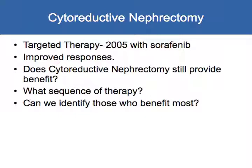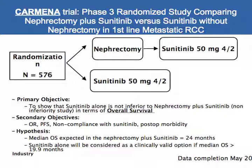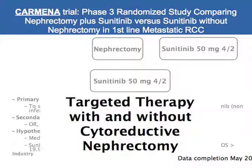In the current era with newer systemic therapies since 2005, we see improved responses both in the kidney and metastatic sites with targeted agents. The question became: does cytoreductive nephrectomy still provide benefit in this era, what sequence of therapy should we undertake, and can we identify those who would benefit most from surgery? The CARMENA trial asks exactly this — is nephrectomy still relevant in the era of targeted therapy, specifically sunitinib — randomizing patients to surgery followed by the drug versus the drug alone. The outcomes of this trial are not yet available.